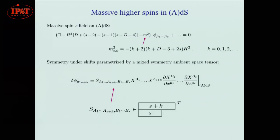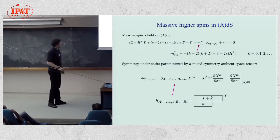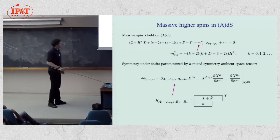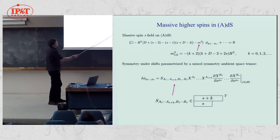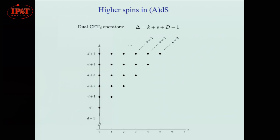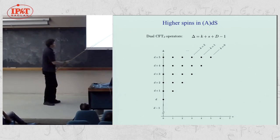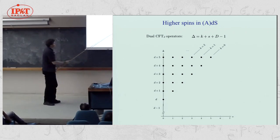The same thing extends to all massive higher spins. For the massive spin-S field on ADS, there's a sequence of special mass values labeled by k where you get a shift symmetry parameterized by a mixed symmetry tensor field with two S plus k indices, symmetric in the S plus k, with this mixed symmetry form. Here's a way to visualize the special mass values in terms of the dual CFT operator: spin on one axis, conformal dimension (basically the mass) on the other. You find integer conformal dimensions — the shift-symmetric scalar, the Galilean, the special Galilean, and their vector analogs.